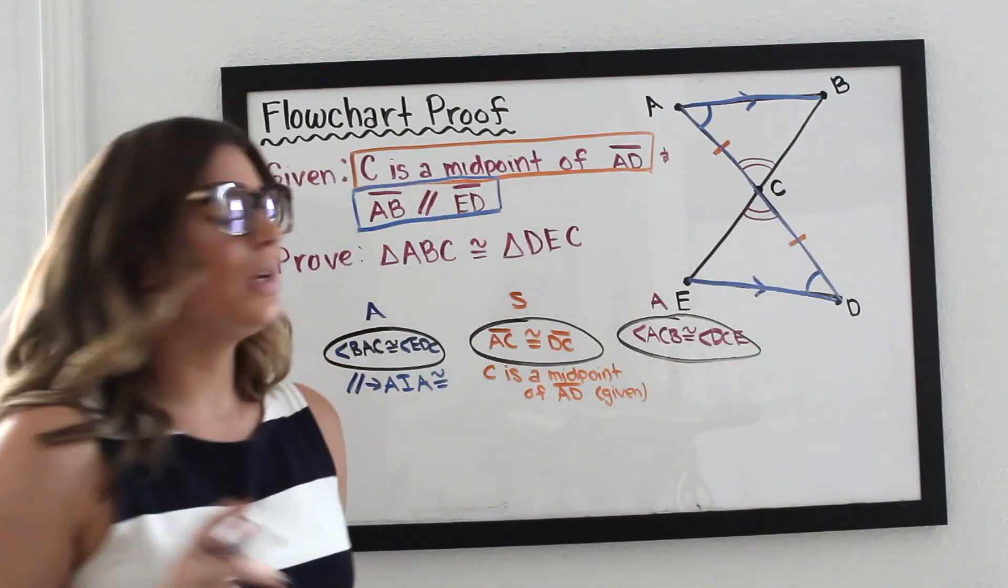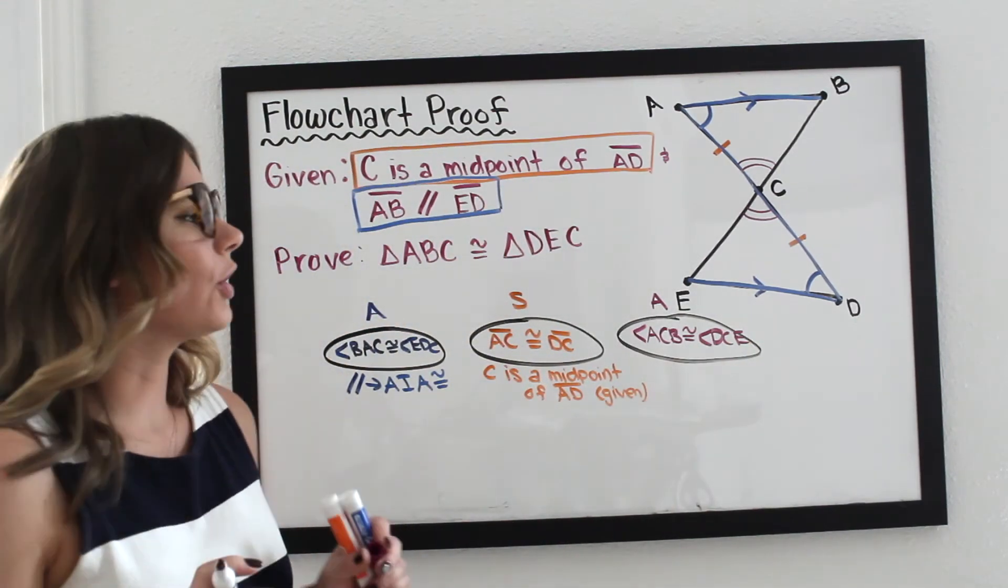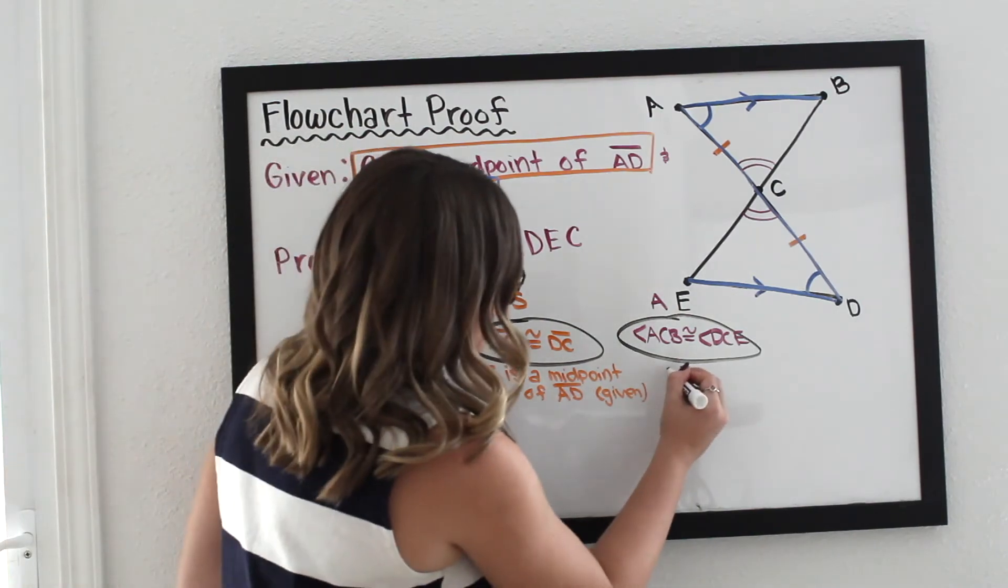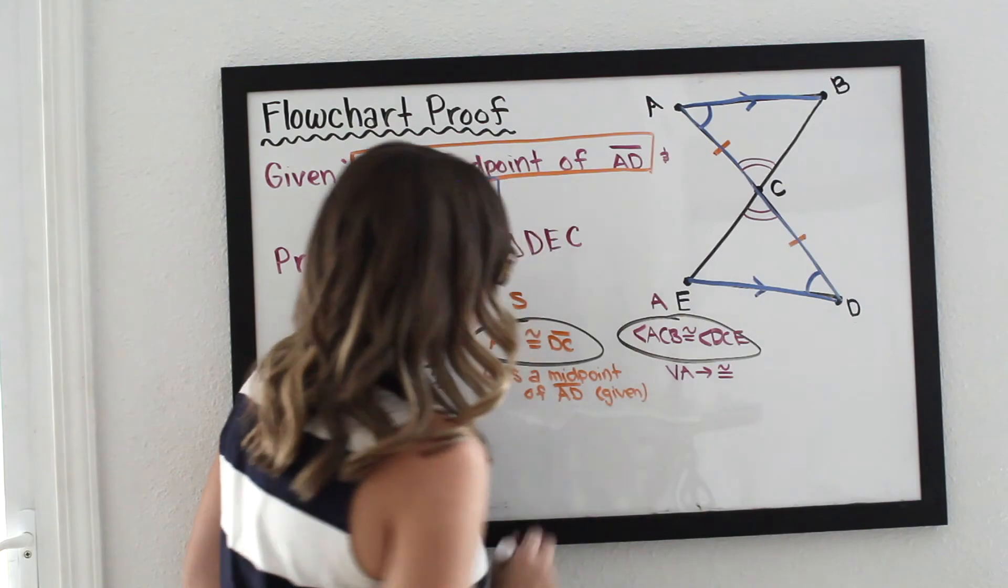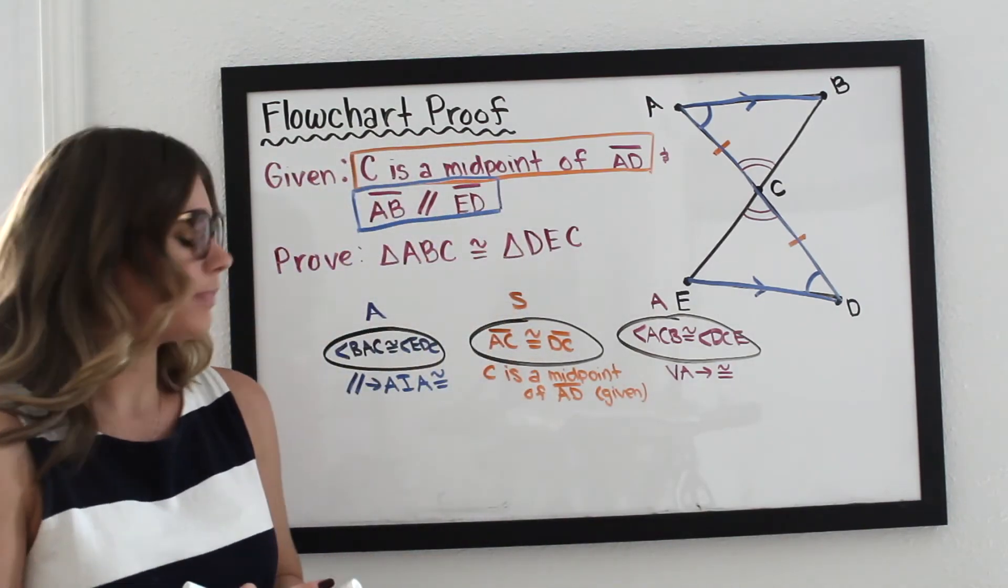Okay, and we know that because vertical angles are congruent, and this is the way that I abbreviate it: vertical angles are congruent.